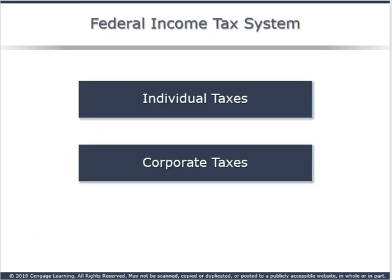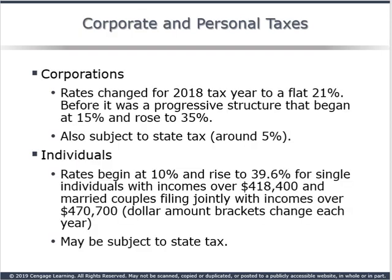Now let's talk about taxes. Within the federal tax code, there are rules related to individuals as well as corporations. In 2018, the tax system changed for corporations because now companies pay a flat 21% on their income. Previously, there was a progressive structure ranging from 15% to 35%, depending on how much you made. Some states have a corporate income tax that has to be paid, and some do not.